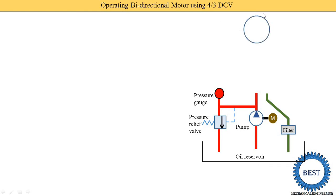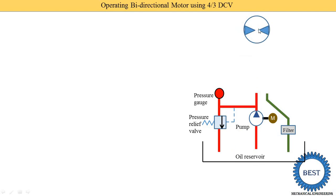Here you see the symbol of the bidirectional motor. First, you need to draw the circle, then draw the two triangles. The apex is near to the center — that is for the motor. For the pump, the apex is touched with the periphery of the circle. That is the difference between the symbol of the pump and the motor. For a unidirectional motor, we only need one triangle. But for the bidirectional motor — 'bi' means two — it is rotated in two directions, so we need to draw two triangles.